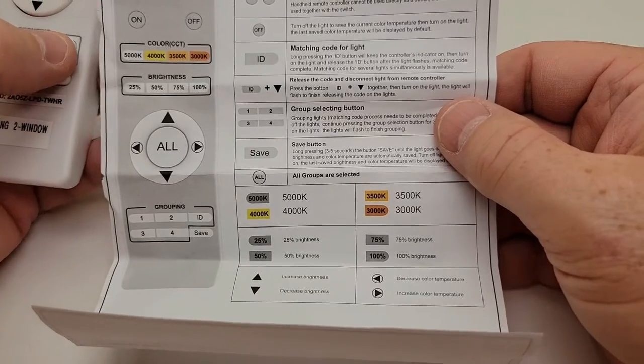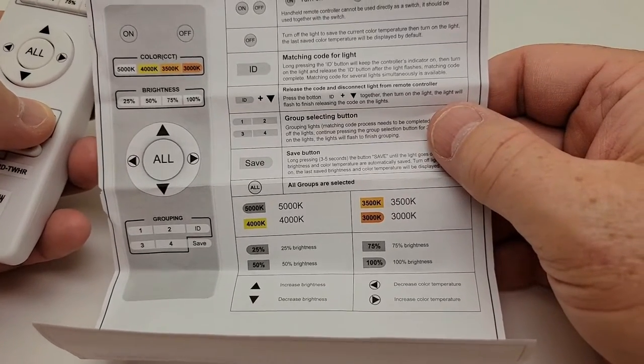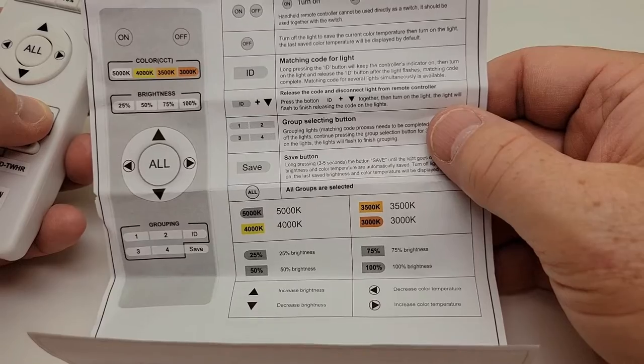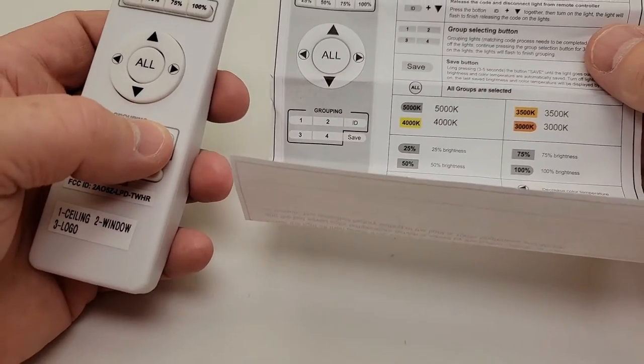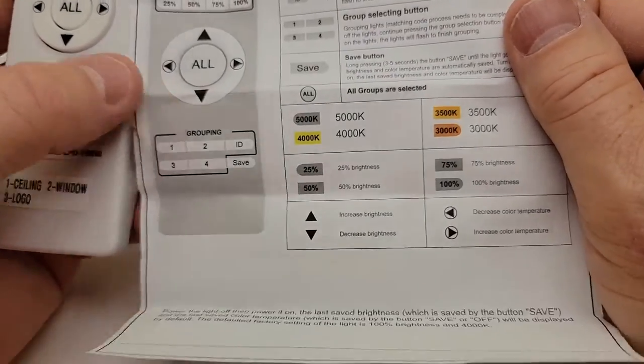You're going to notice it. Turn the lights off. Hold the ID button. Turn your lights on or plug them in. And then the lights are going to flash to let you know that they are now being controlled with this. And then again, you can put it in groupings.